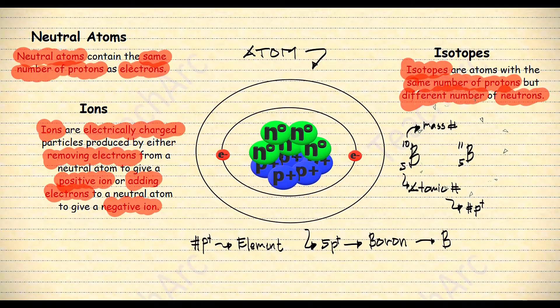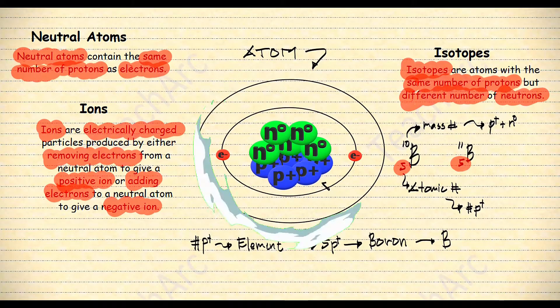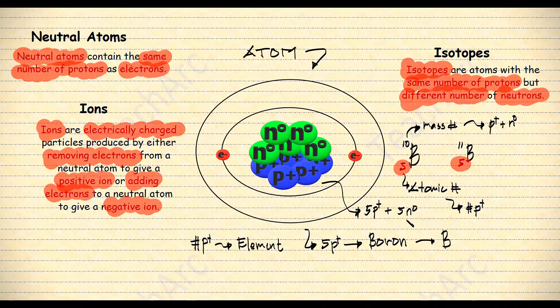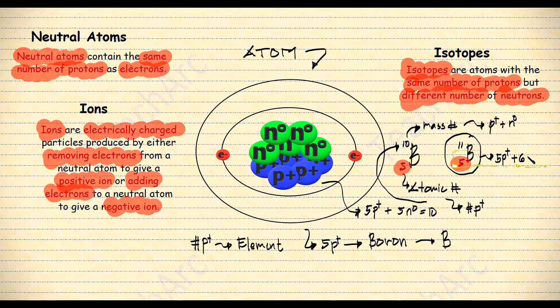Take note, it is still boron because it has five protons. The mass number, by the way, is the sum of the protons and the neutrons of an atom. Our model here has five protons and five neutrons, that is why the mass number is 10. This means that this atom here has five protons and six neutrons, so that the mass number is 11.